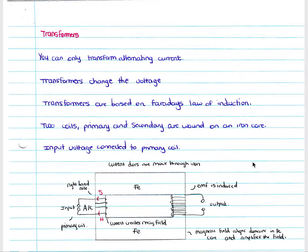We need to know that you can only transform alternating current — you cannot transform direct current. Transformers change the voltage, and on one side of your transformer you will have a certain voltage. You can either have a step up transformer where you raise your voltage, or a step down where you lower your voltage.